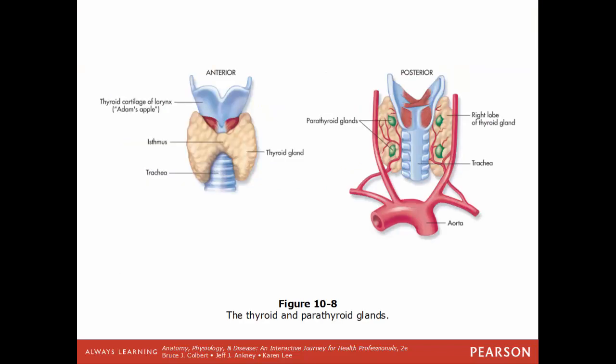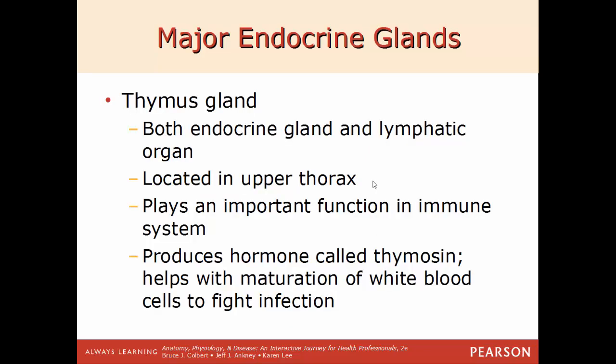The thyroid and parathyroid glands are located just below the larynx (voice box or Adam's apple). The thyroid is a bilobed gland, and on the backside are four small nodules — the parathyroids. The thymus gland is both an endocrine gland and a lymphatic organ located in the upper thorax. It plays a vital role in the immune system, where certain blood cells go to mature and become T lymphocytes and B lymphocytes. The thymus produces a hormone called thymosin, which helps these special white blood cells mature.